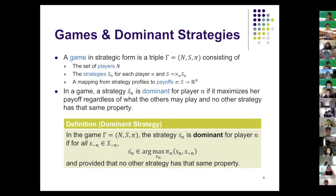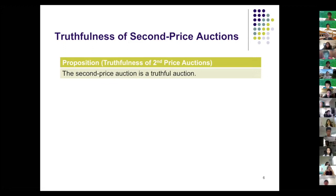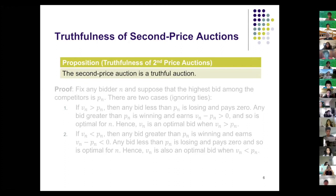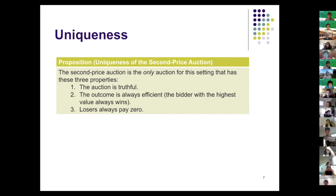We say an auction is truthful if each player's dominant strategy is to bid truthfully — that is, to report their value. The second price auction is a truthful auction. In fact, it's the only auction for this setting with three properties: it's truthful, the outcome is always efficient (the bidder with the highest value always wins), and losers pay zero. We can prove that mathematically.